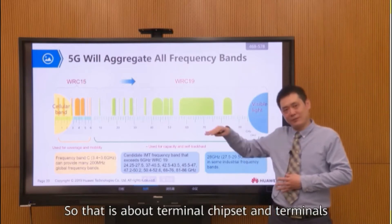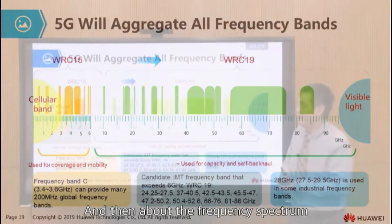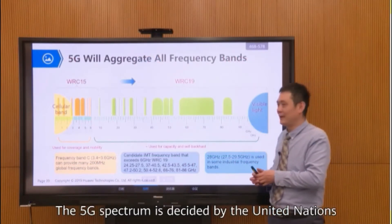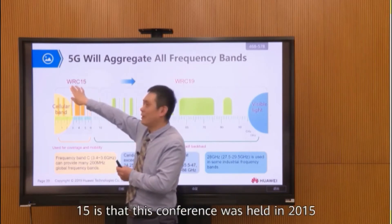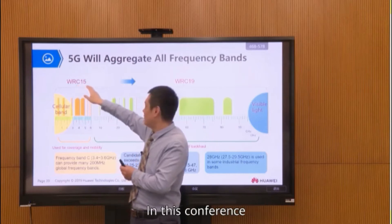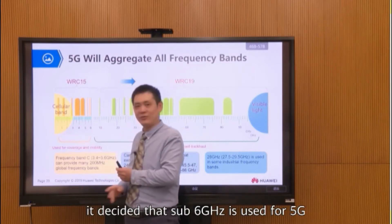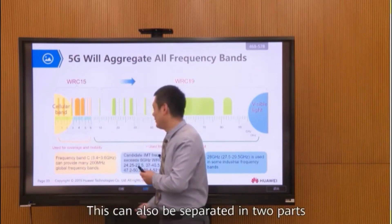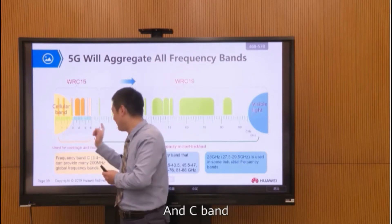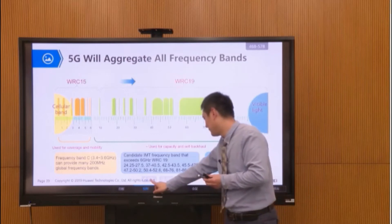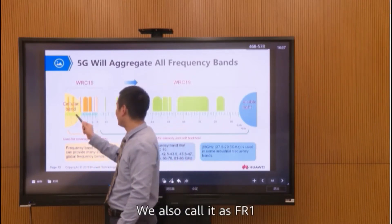So that is about terminal chipset and terminals, and then about the frequency spectrum. The 5G spectrum is decided by the United Nations WRC — the World Radio Conference. This conference was held in 2015, and it decided that sub-6 GHz is used for 5G. That is below 6 GHz, and this can be separated into two parts: sub-3 GHz and C-band. This is the first frequency range that can be used for 5G, and we also call this FR1.